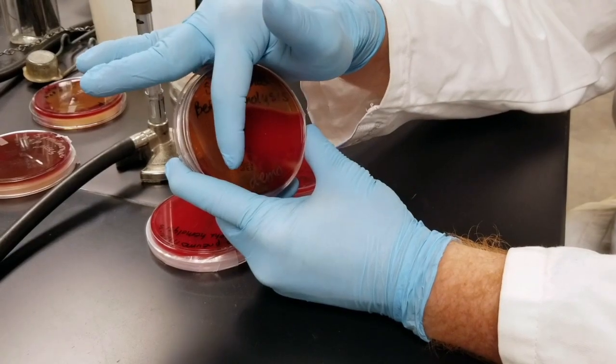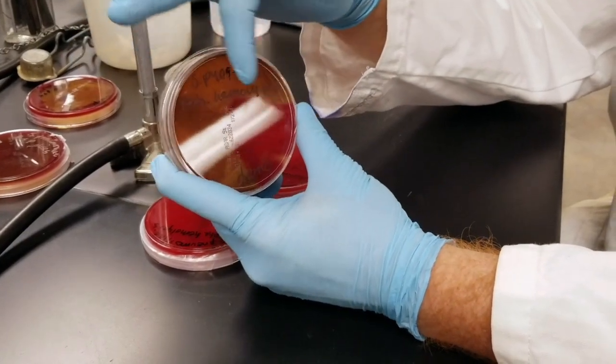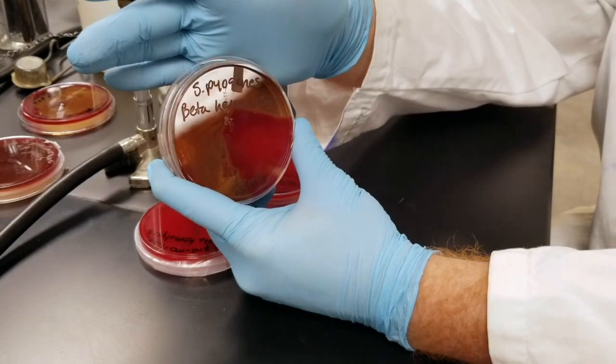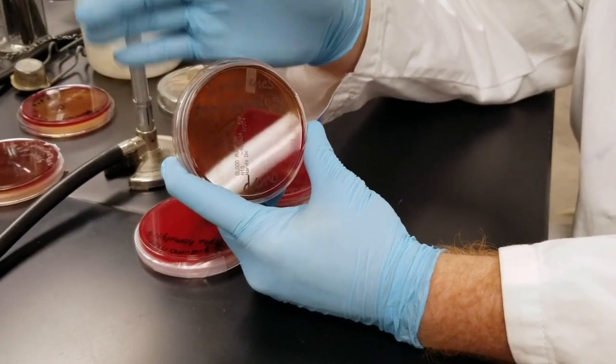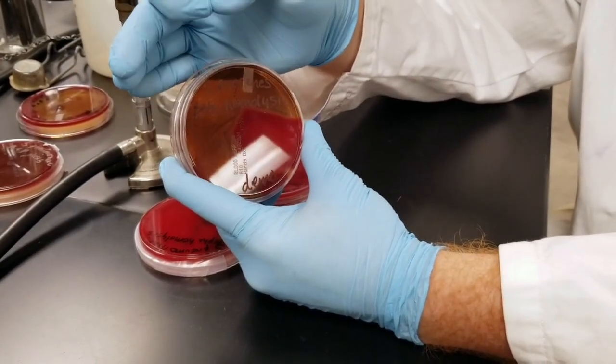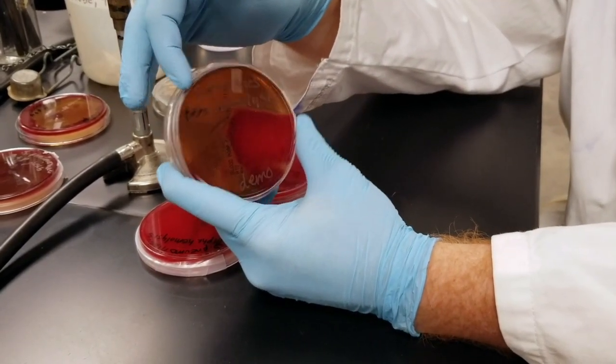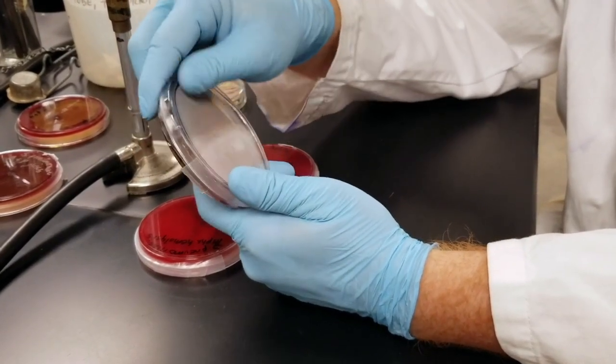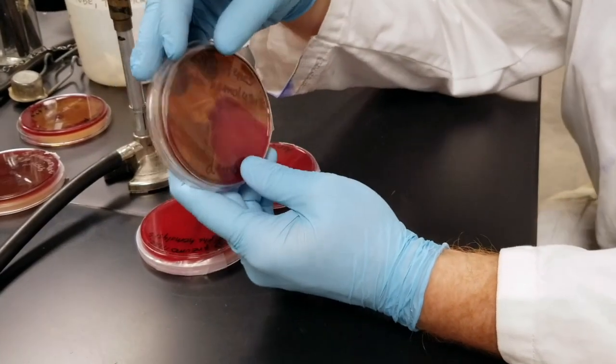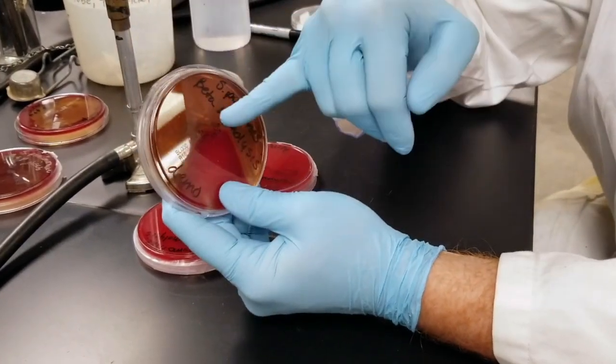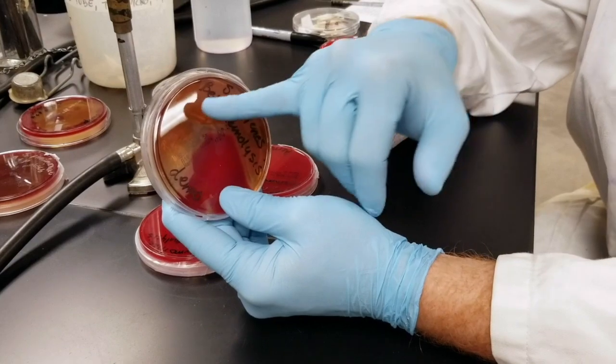However, in this yellow area here, it's clear. So this means that the bacteria that we plated would lyse the red blood cells in blood agar and we have positive growth. So it's a little hard to see, but if you look through, you can see some of the colonies on the plate itself.